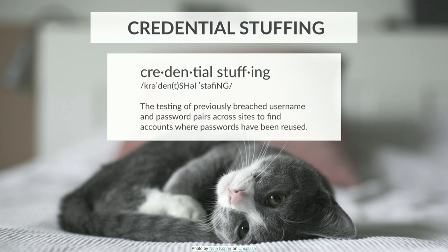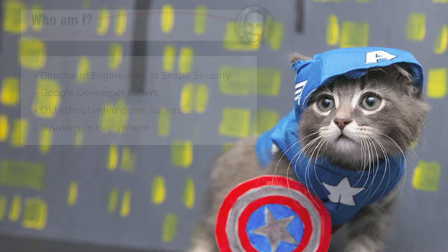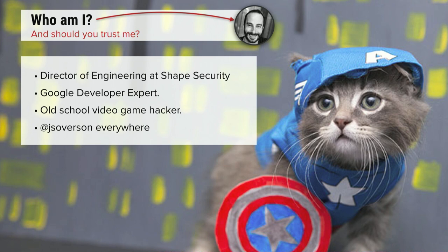You might look at that and immediately wonder, what the hell is there to evolve? It's pretty basic. But first off, who am I and why should you trust me? My name is Jared Overson. I'm Director of Engineering at Shape Security. Shape Security is a U.S. company founded by the guy who coined the term credential stuffing, about 10 years ago at the Department of Defense when he saw a bunch of attacks.